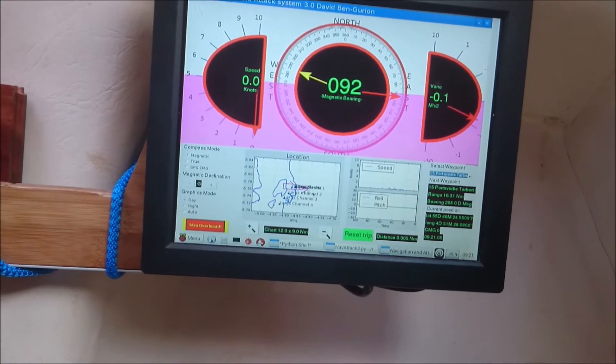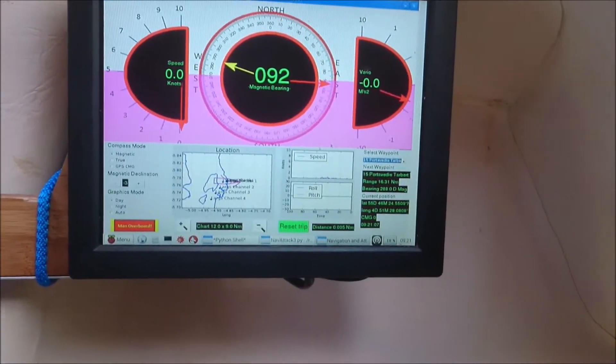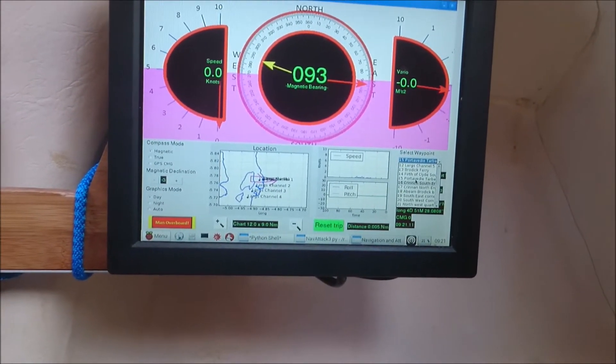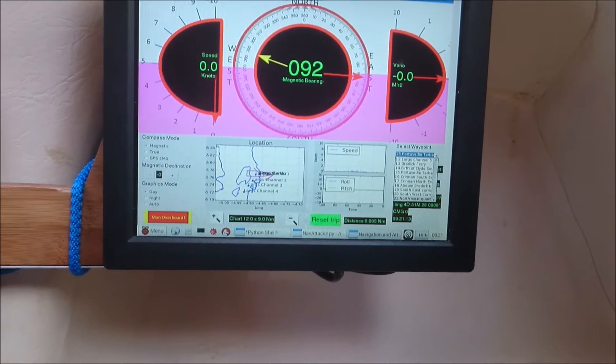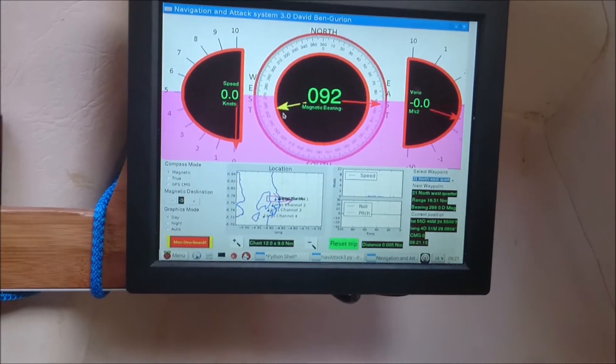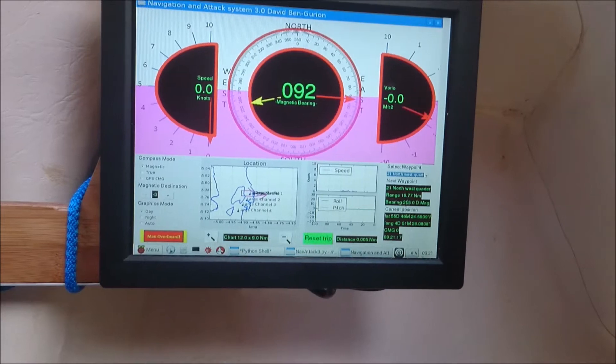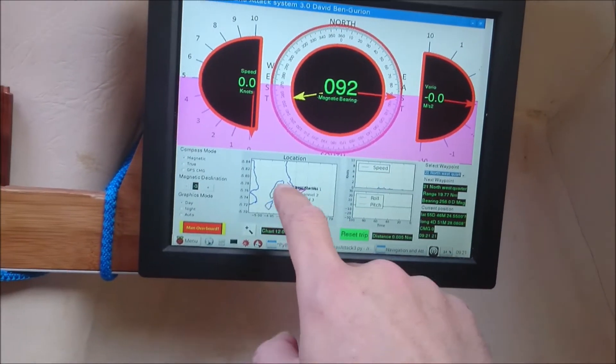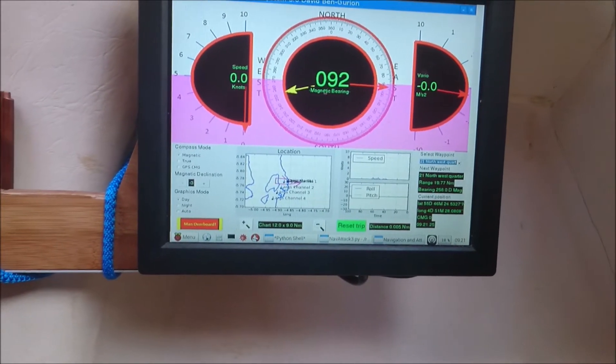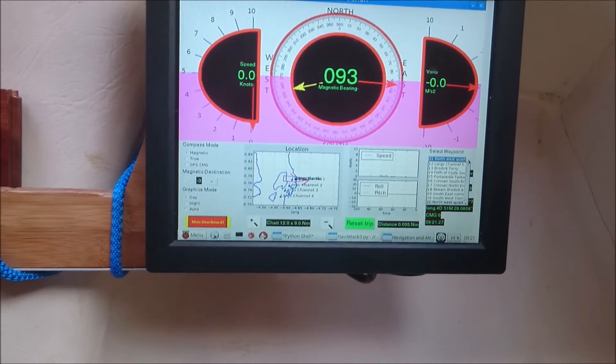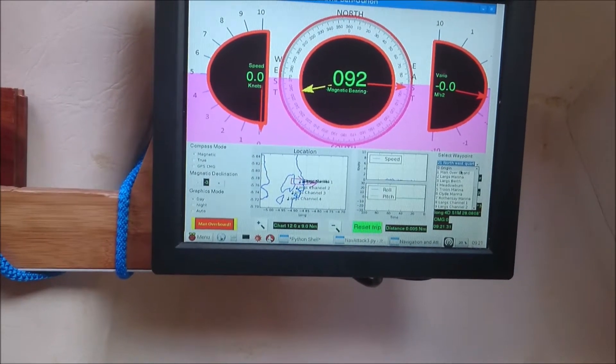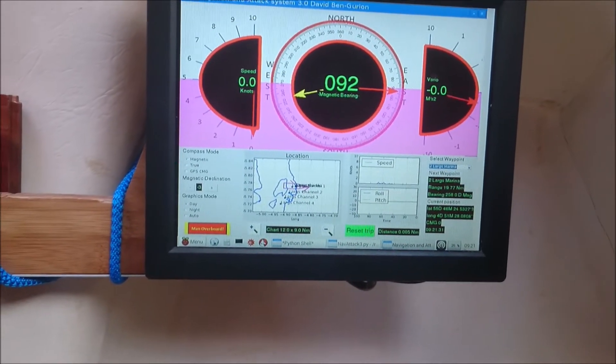And you can see there's some waypoints here which I've programmed into a text file. So you can select whichever waypoint you want here. Let's just give you an example. Let's say Northwest quarter of Arran. And that's the direction it is. The range is 19.7 nautical miles. And it'll be down here somewhere. So you can literally just line your course up with your waypoint. And that'll sort that out.